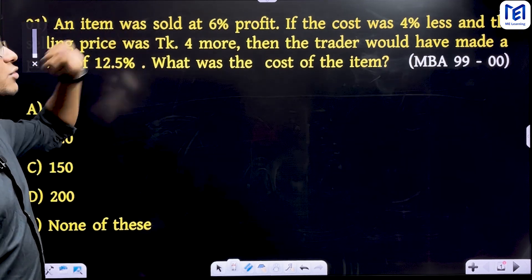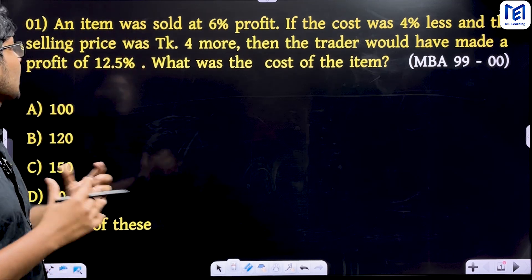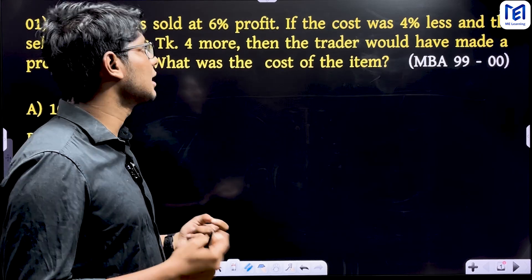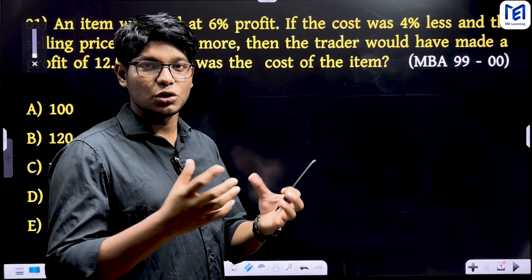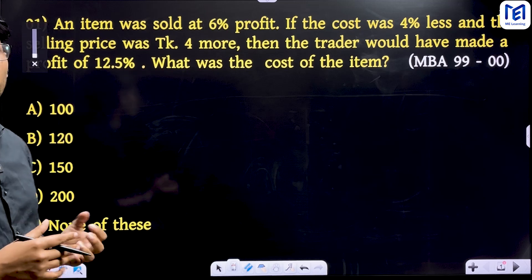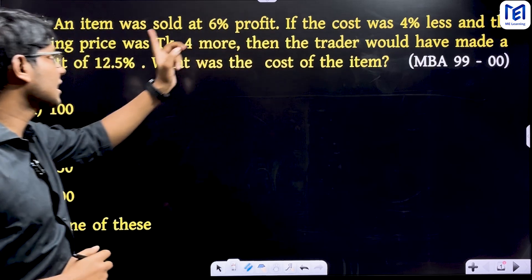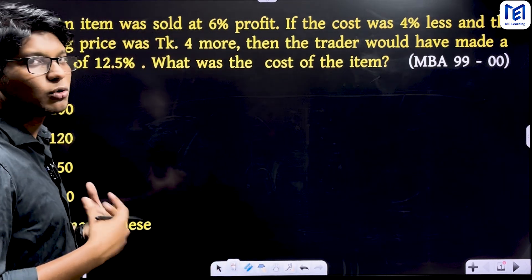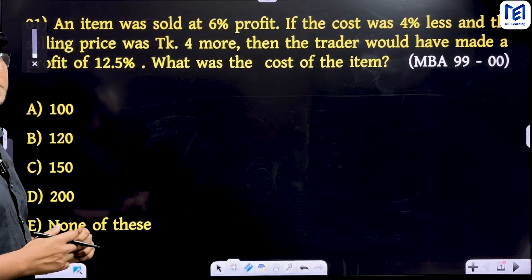An item was sold at 6% profit. If the cost was 4% less and the selling price was 4% more, then the trader would have made a profit of 12.5%.